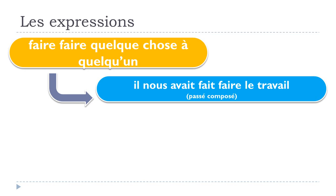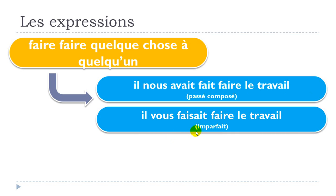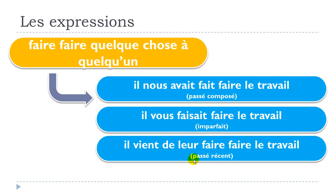Now for the past tenses. Il nous avait fait faire le travail — that's the plus-que-parfait, with the pronoun 'nous' for the first person plural. For imparfait with the second person plural: il vous faisait faire le travail. For passé récent with the third person plural masculine, the pronoun is 'leur': il vient de leur faire faire le travail.